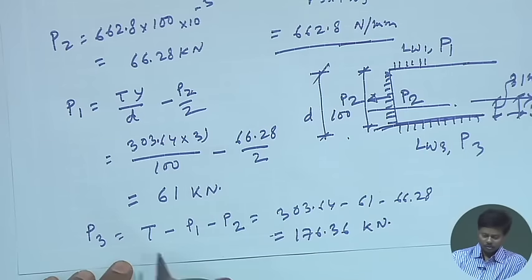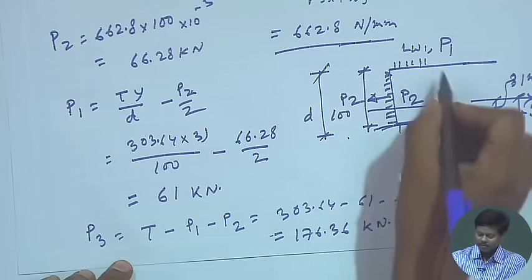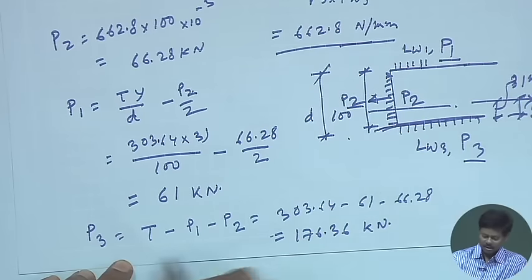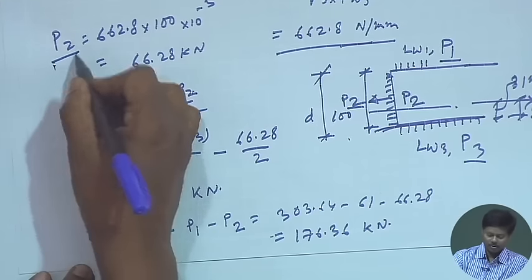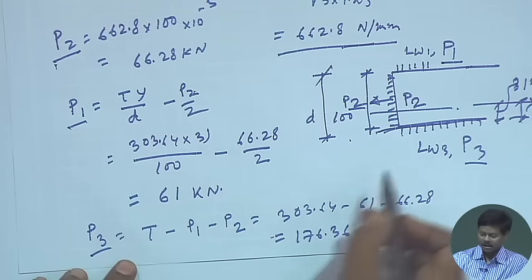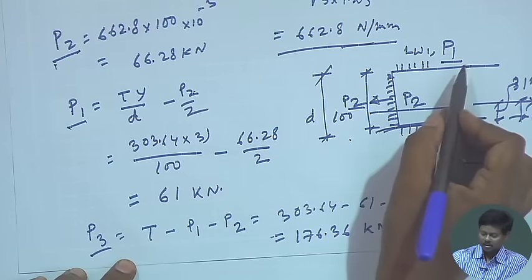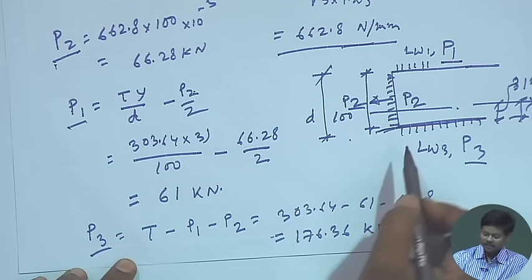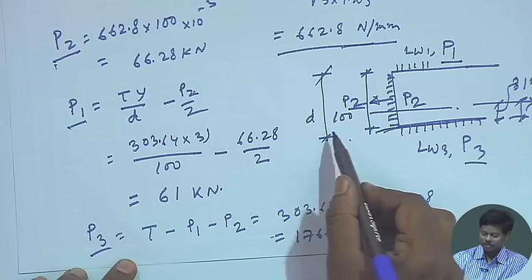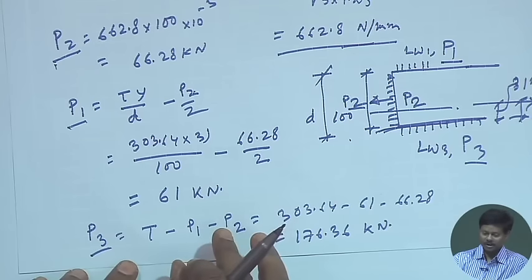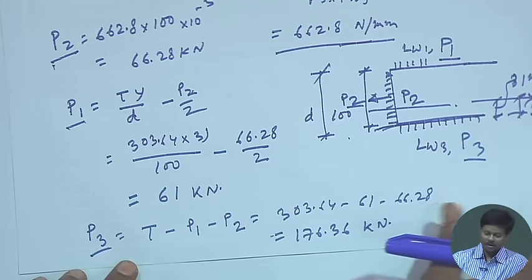The force to be resisted at the lower side of the angle, P3, is total force minus P1 minus P2: P3 = 303.64 − 61 − 66.28 = 176.36 kN. The forces P1, P2, P3 are found such that their resultant equals T without producing any additional moment.